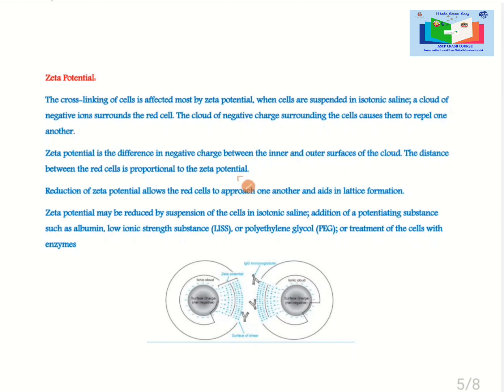Let's have a discussion on zeta potential. The cross-linking of cells is affected most by zeta potential. When cells are suspended in isotonic saline, a cloud of negative ions surrounds the red cells. The cloud of negative ions surrounding the cells causes them to repel one another. Zeta potential is the difference in negative charge between the inner and outer surface of the cloud. The distance between the red cells is proportional to the zeta potential.